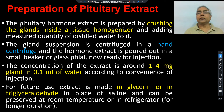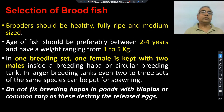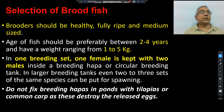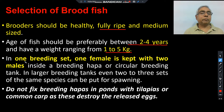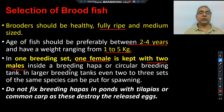Once we have made the pituitary extract, we select the brood fishes — those fishes which will be injected with this hormone. To select brooders, certain criteria have been defined: brooders should be healthy and fully ripe, meaning sexually mature. Generally we take fishes of 2 to 4 years of age, with body weight between 1 to 5 kg. In each breeding set, one female is paired with two males. These selected fishes are placed either in a breeding hapa or in circular breeding tanks.